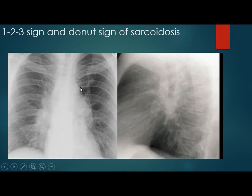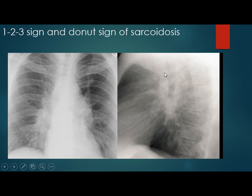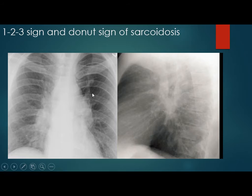We have the 1-2-3 sign and the panda sign of sarcoidosis. In the 1-2-3 sign, there is enlargement of both hilar and right paratracheal lymph nodes. Sometimes they say there is a fourth, which is concavity of the aortopulmonary window. In the panda sign, we see opacity around the trachea from enlarged lymph nodes. Keep in mind: bilateral symmetric hilar lymphadenopathy is sarcoidosis — it closely resembles lymphoma, but lymphoma shows asymmetrical enlargement.